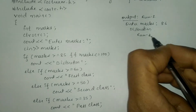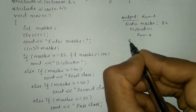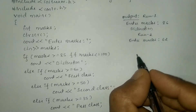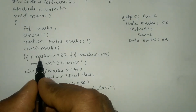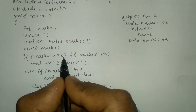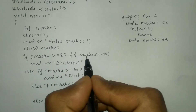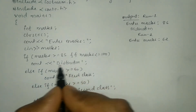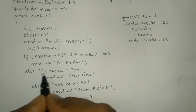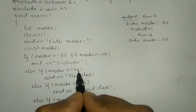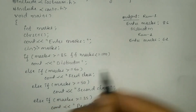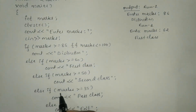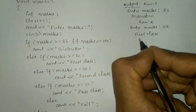Now let us run this program one more time — Run 2. Once again it is going to ask the user to enter marks, and this time I am going to enter 62. We check: 62 is greater than or equal to 85 — no, false. 62 is less than or equal to 100 — yes, true. False AND true is false, so distinction will not print. Next it checks else if: 62 is greater than or equal to 60 — yes, condition is true — so it is going to print 'first class', and the control comes out of the if-else statement.